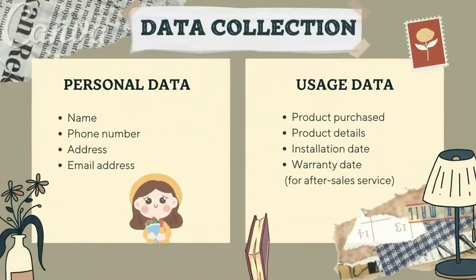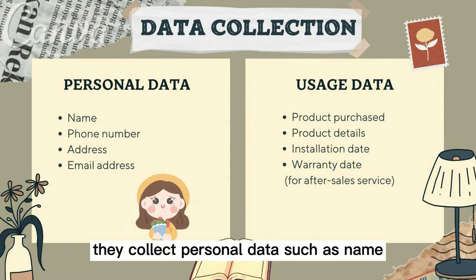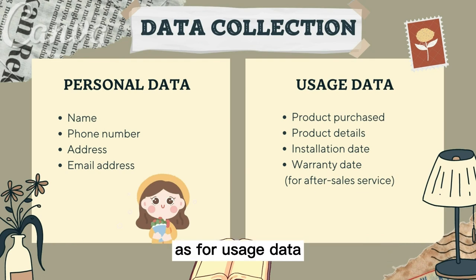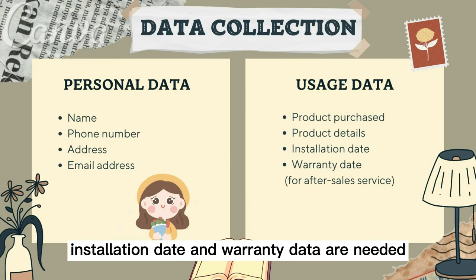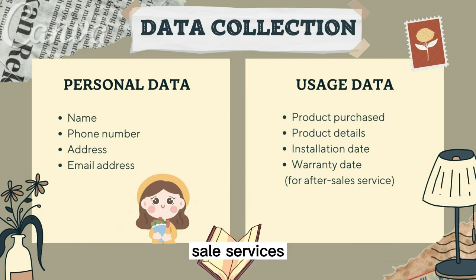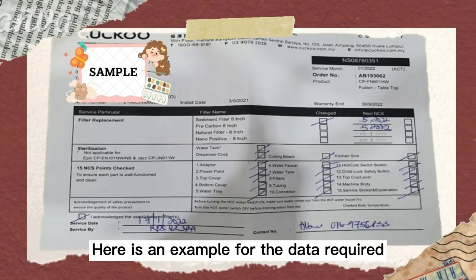In terms of data, Kuku collects data in order to process its transactions. They collect personal data such as name, phone number, address, and email address. As for usage data — product purchased, product details, installation date, and warranty data — these are required for the purpose of after-sales services.